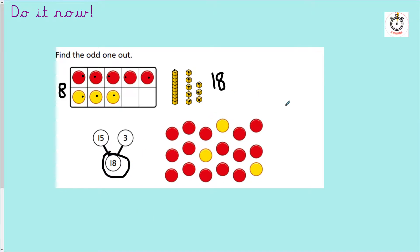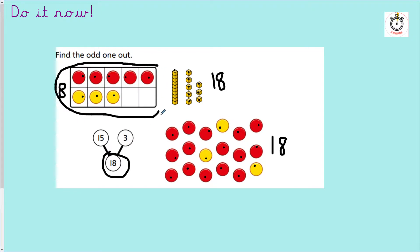Let's count the counters. One, two, three, four, five, six, seven, eight, nine, ten, eleven, twelve, fifteen, sixteen, seventeen, eighteen. So what is the same and what is different? We've got the same number of Dienes as counters, and in our part-part-whole, fifteen and three makes eighteen. So we've got eighteen, eighteen, eighteen. And I can see here in my tens frame I don't have eighteen. So the odd one out is the tens frame because it's different from everything else. Well done if you got that right.